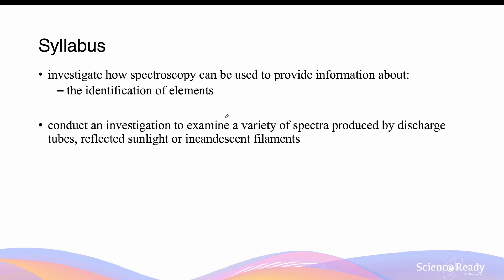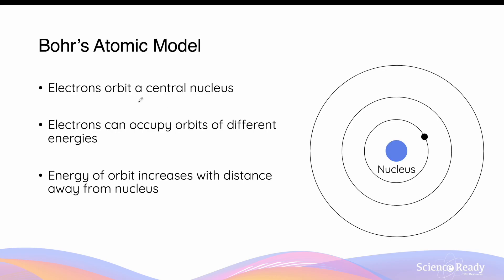Hello everybody, this video is an introduction to spectroscopy. In Bohr's atomic model, electrons orbit a centrally positioned nucleus in circular orbits, and Bohr proposed that these orbits have different energy levels. The orbits closer to the nucleus have lower energy levels, and the ones further out have a higher energy level. So the energy of the orbit increases with its distance away from the nucleus.